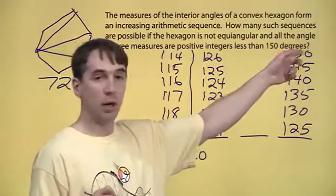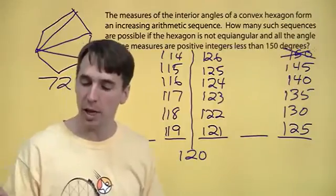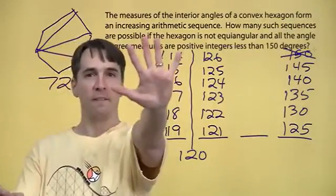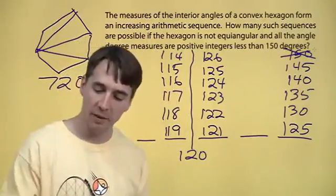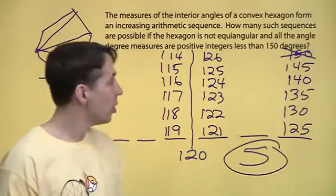Less than 150 degrees. Can't use that one. So there are five. We found five possible sequences. Right there.